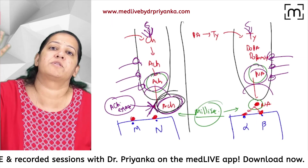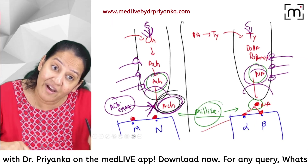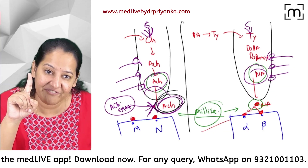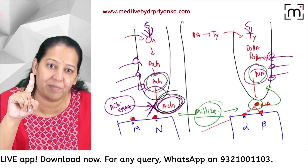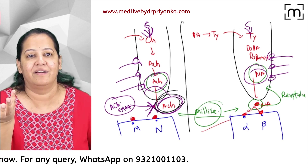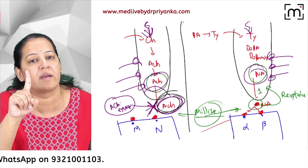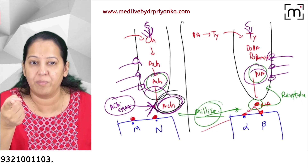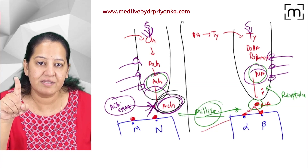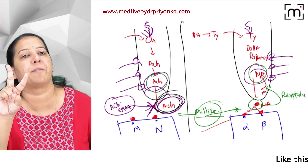Noradrenaline cannot keep acting on receptors forever — after a millisecond its action is terminated, but not by destruction. It is terminated via reuptake. That is the biggest difference. Reuptake occurs first into the cytoplasm — this is called reuptake 1.